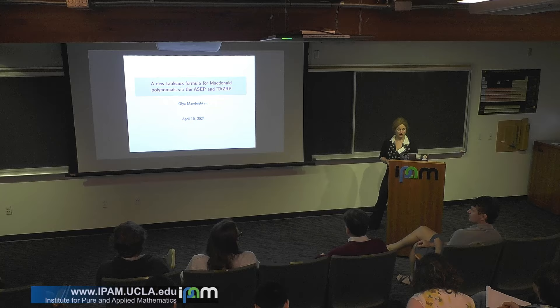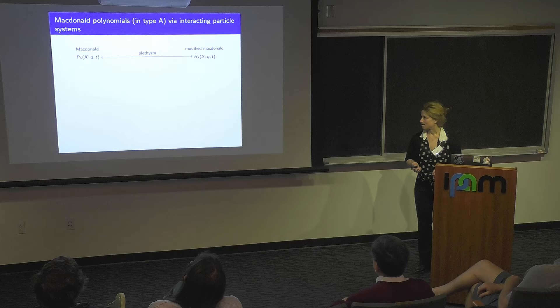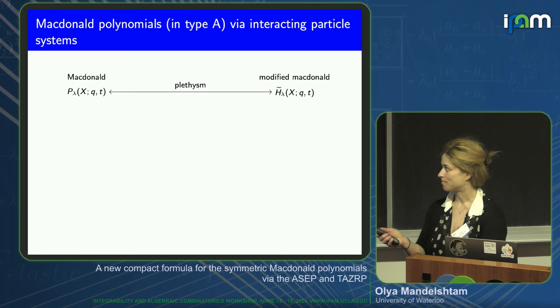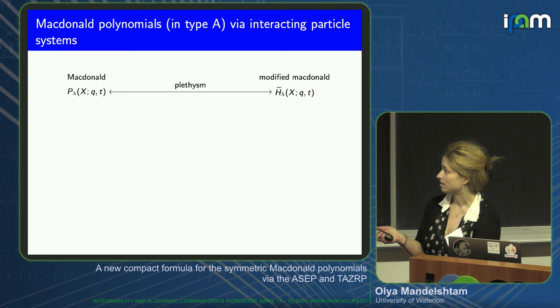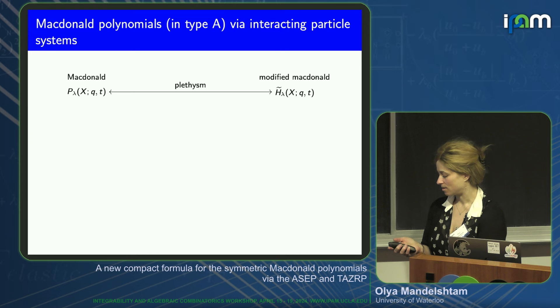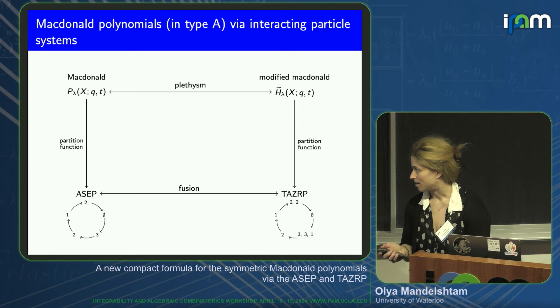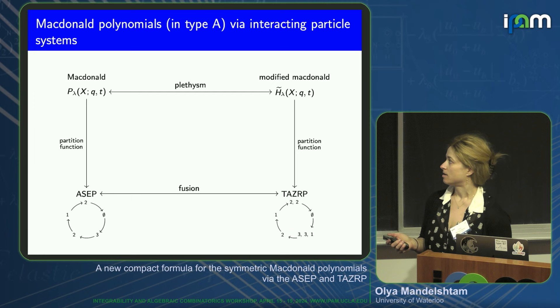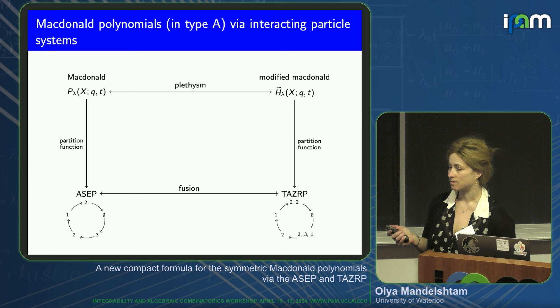Thank you for the opportunity to give this talk. My goal today is to present a tableau formula for McDonald polynomials exclusively from the perspective of two particle processes called the ASEP and the TASRP. The ASEP is the asymmetric simple exclusion process, and the TASRP is the totally asymmetric zero range process.